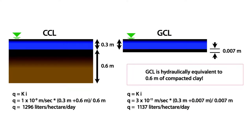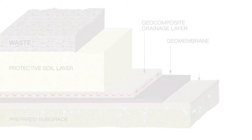A fully hydrated geosynthetic clay liner may exhibit a hydraulic conductivity that is approximately 2 to 3 orders of magnitude lower than a traditional compacted clay liner. When compared to compacted clay, an appreciably thinner geosynthetic clay liner, which is manufactured in a controlled environment and is characterized by uniformity, provides equal and arguably superior hydraulic barrier performance.